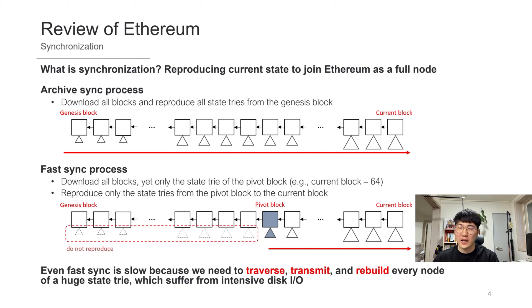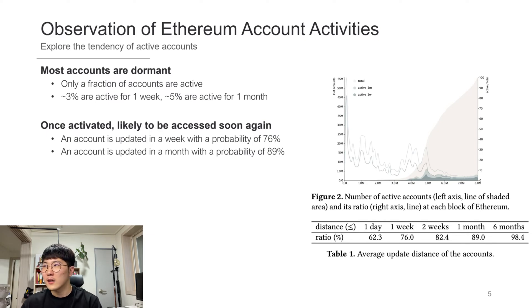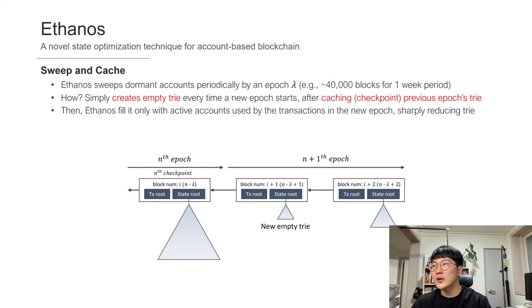To accelerate synchronization, we first investigated Ethereum data and observed that most accounts are dormant and only a fraction of accounts are active, as shown in figure 2. About 3% are active for one week, and about 5% are active for one month. We also found that once an account is activated, it is likely to be accessed soon again, as shown in table 1. An account is updated in a week with a probability of 76%, and in a month with a probability of 89%, and almost all accounts will be updated in 6 months. So, we proposed Ethanos, which sweeps dormant accounts periodically by an epoch lambda — for example, lambda can be 40,000 blocks for a one-week period. We call the last block of an epoch a checkpoint.